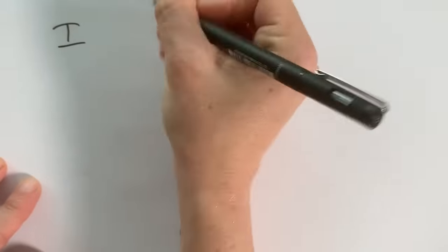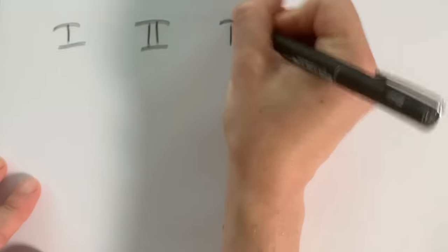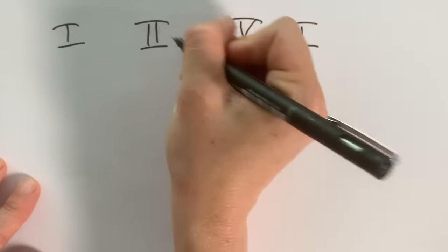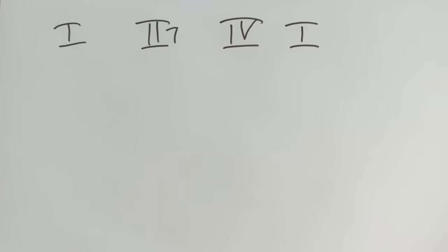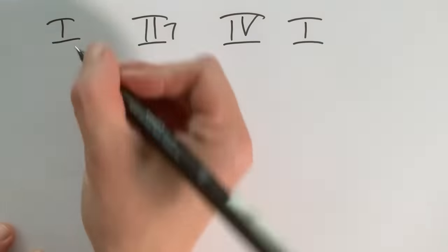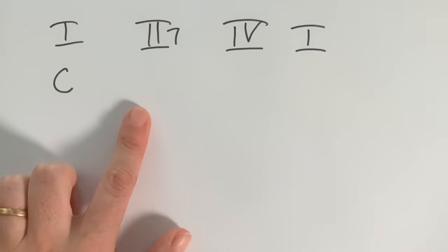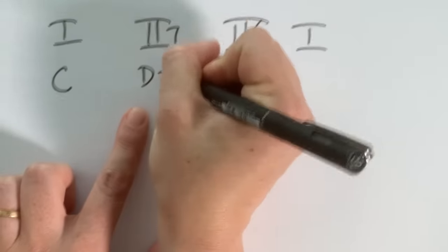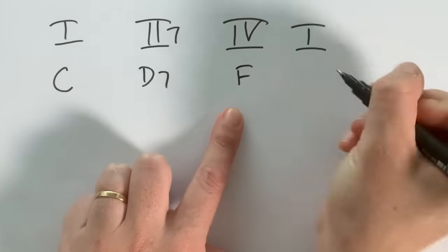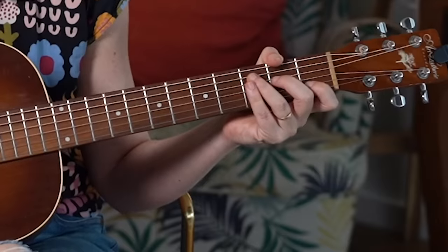A basic chord progression that uses this principle is to go I – II – IV and back to I, and the II actually sounds really nice played as a dominant 7 chord. Often just changing the key will take us away from the reference song and loosen our ears up so we don't feel like we're just imitating it. So I'm going to take it to the key of C, where the II dominant 7 is a D7 chord, the IV chord is F, and then back to C.